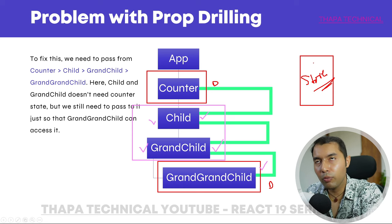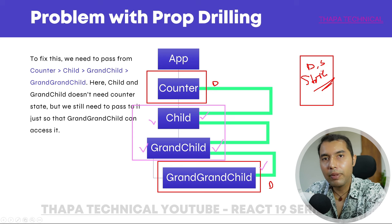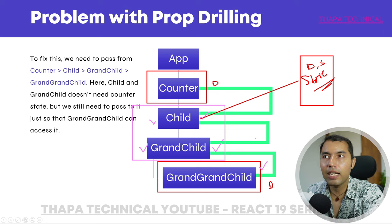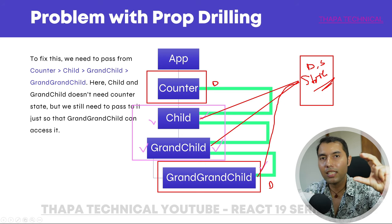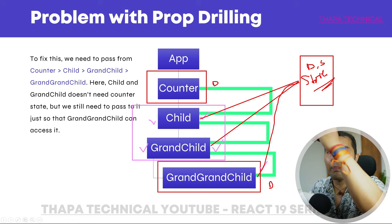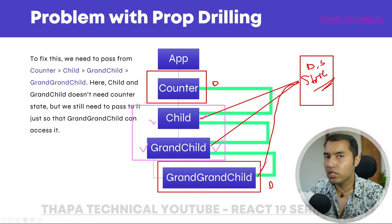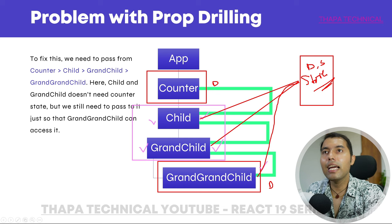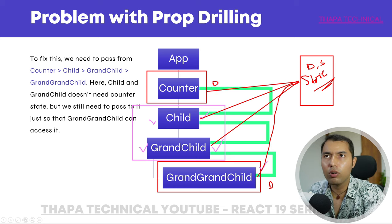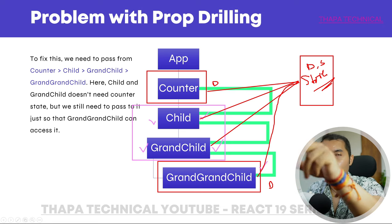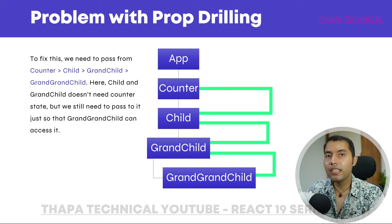इस store पर आपके जितने भी data हैं, जितनी भी states हैं — सब आप यहाँ अलग सा रख दीजिए। कल child को data चाहिए — ले लेगा। Grandchild को चाहिए — वो भी इस store से ले लेगा। यह एक अलग सा warehouse है जहाँ से कोई भी कभी भी data ले सकता है, बिना किसी parents या children को disrupt किए। But in reality, यह पूरी तरह सच नहीं है।